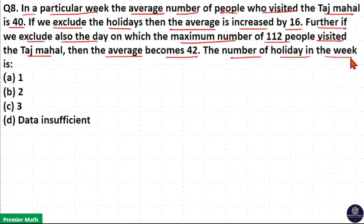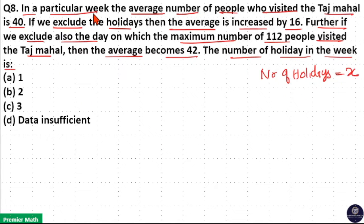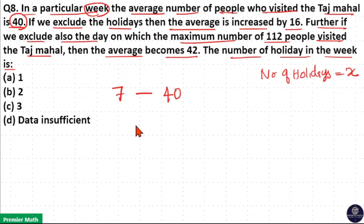Let us consider the number of holidays as X. In a week, the average number of people who visited the Taj Mahal is 40. That means in a week there are 7 days, and in 7 days, an average of 40 people visited the Taj Mahal. If we exclude the holidays, that means 7 minus X days remain.